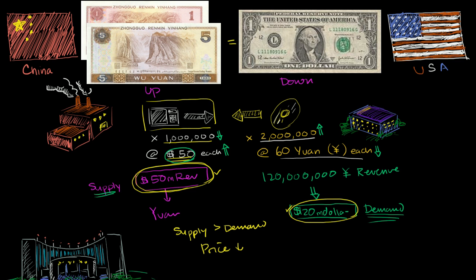So the supply of dollars, which is this $50 million right over here, is going to be much greater than the demand, which is the $20 million.